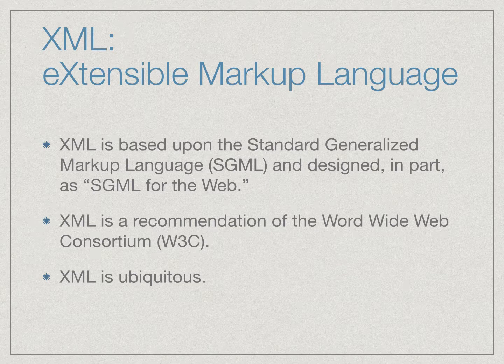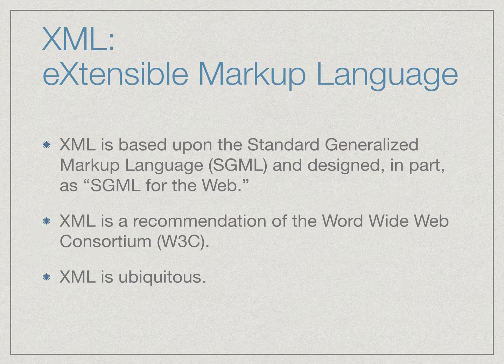Many applications and APIs use XML as an input and output format. JSON, the JavaScript object notation, is an alternative to XML that's increasingly used on the web as a lightweight data interchange format for more data-centric applications. But XML remains ubiquitous, especially for longer form or more complex documents such as web pages, office documents, novels, dictionaries, letters, or epic poems.